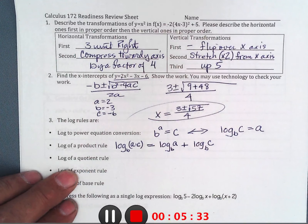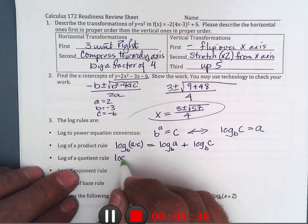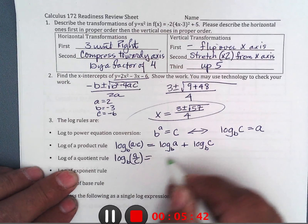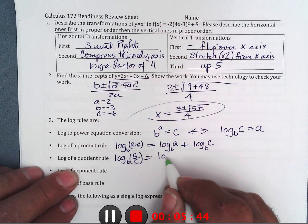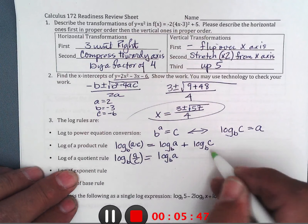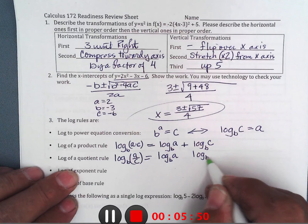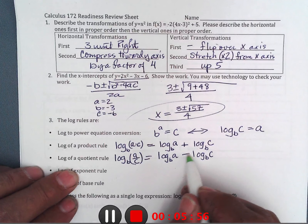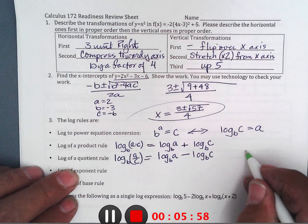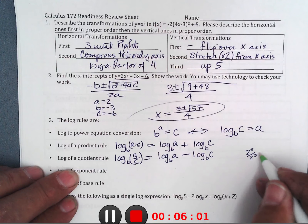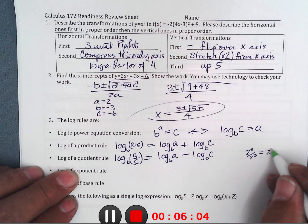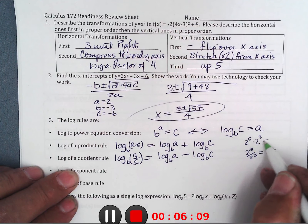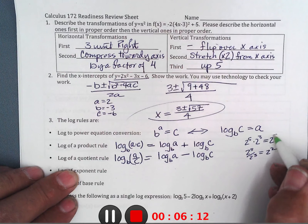Similarly, log base b of (a divided by c) equals the power to get a minus the power to get c — when dividing, you subtract powers. For example, 2 to the 5th over 2 to the 3rd: subtract 3 from 5 to get 2 squared. And 2 to the 5th times 2 to the 3rd: add powers to get 2 to the 8th. That's the exponent rule.